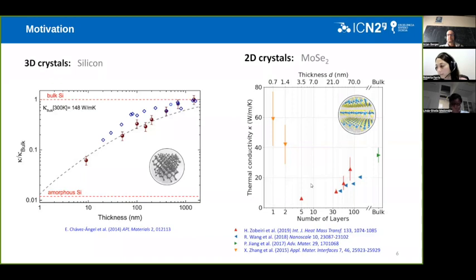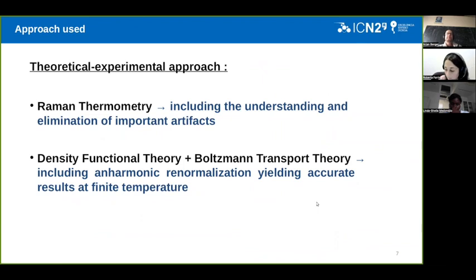While in the case of experimental studies, there are only works in the range above 30 layers, with some exceptions. So the idea is to do a work in which we do a joint effort between a theoretical and experimental group, in order to predict what happens to the thermal conductivity in the in-plane direction systematically from one to the bulk.